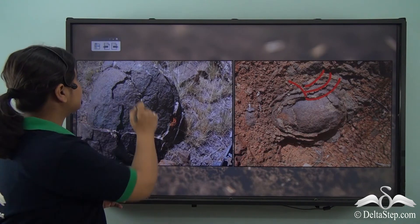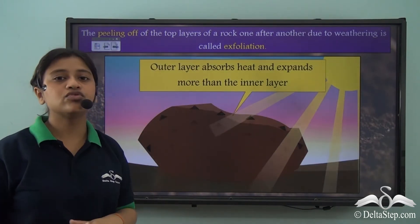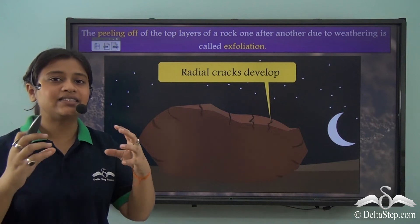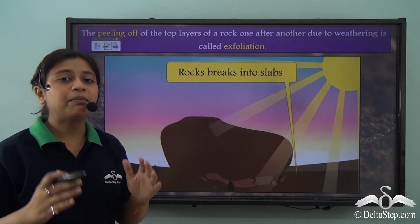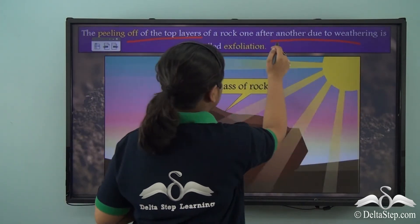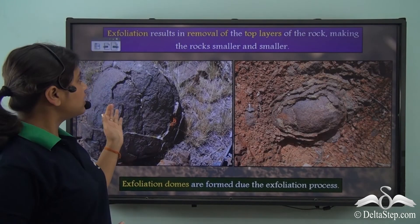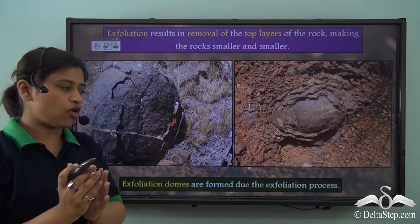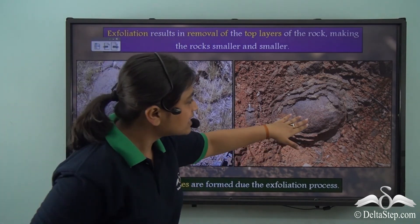So how does onion weathering happen? A rock with a uniform mass throughout goes through expansion during daytime and contraction during night. The upper layers get most affected and tend to break off, exposing the inner layers to the agents of weathering. The peeling off of the top layers of the rock one after another due to weathering is called exfoliation or onion weathering. Exfoliation results in the removal of top layers, making the rock smaller and smaller, and exfoliation domes are also formed in this process.